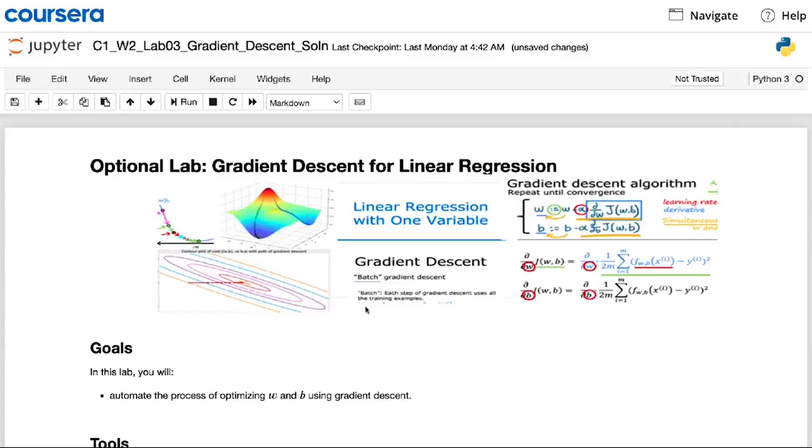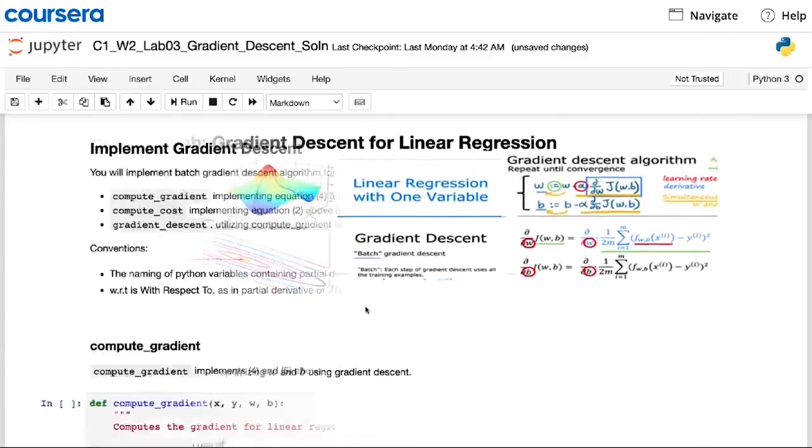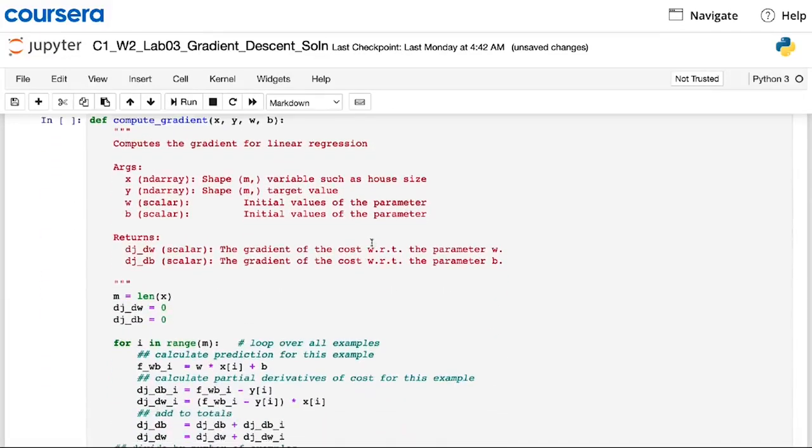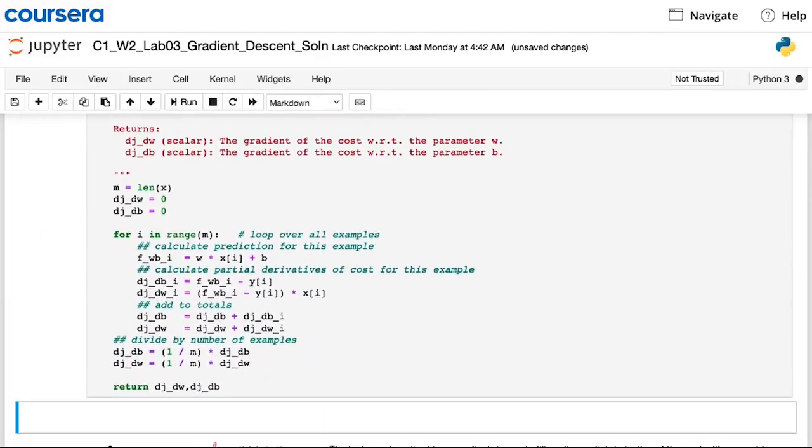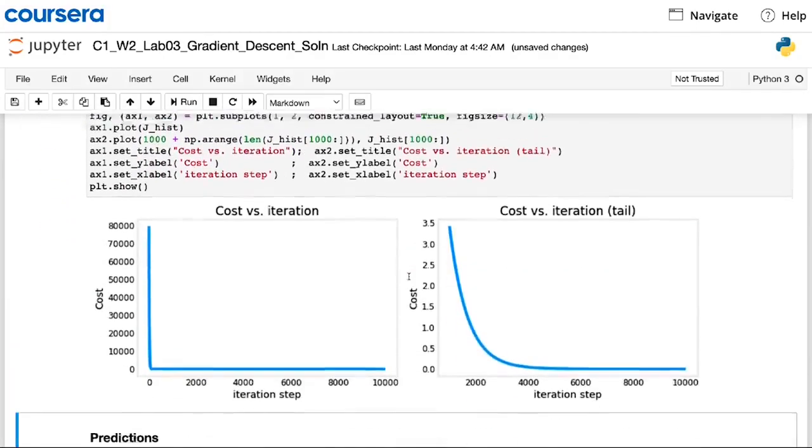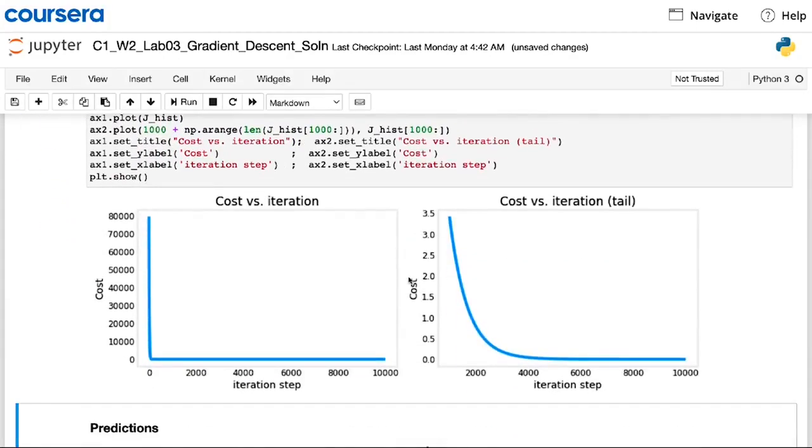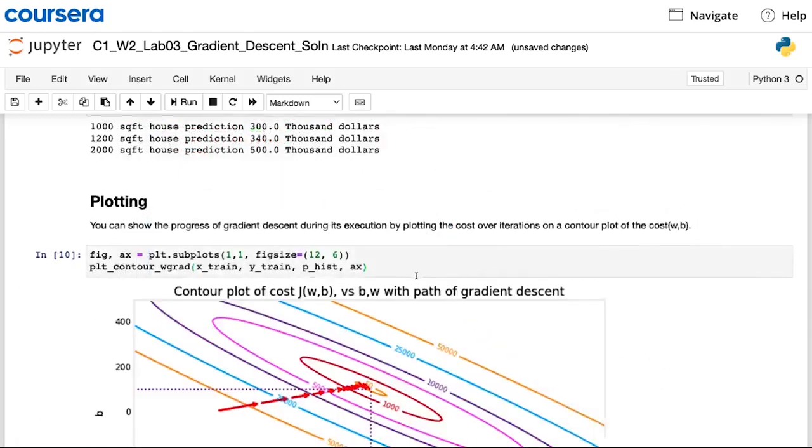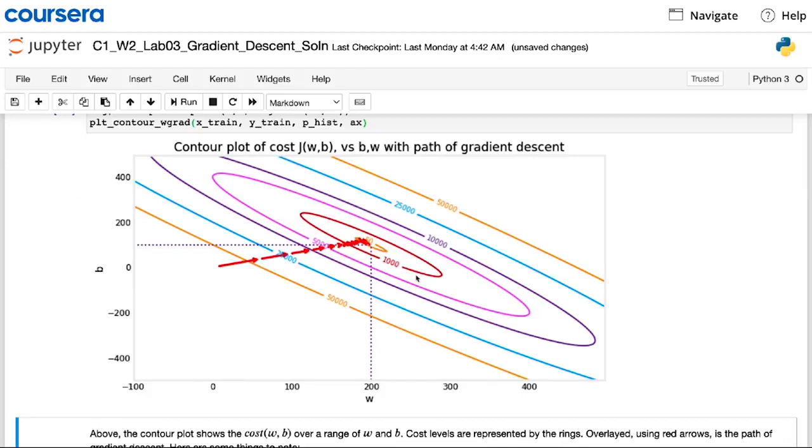In the optional lab that follows this video, you'll see a review of the gradient descent algorithm as well as how to implement it in code. You'll also see a plot that shows how the cost decreases as you continue training more iterations. And you'll also see a contour plot, seeing how the cost gets closer to the global minimum as gradient descent finds better and better values for the parameters w and b.